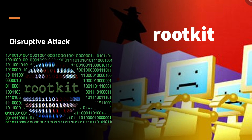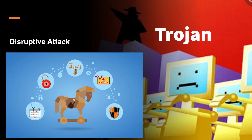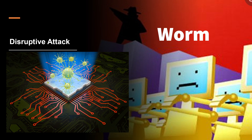Rootkits intercept and change standard operating system processes. After a rootkit infects a device, you can't trust any information that the device reports about itself. Trojans are a common type of malware which can't spread on their own. This means they either have to be downloaded manually or another malware needs to download and install them. These trojans often use the same file names, so it's easy to accidentally download a trojan thinking that it's a legitimate application. A worm is a type of malware that can copy itself and often spreads through a network by exploiting security vulnerabilities.